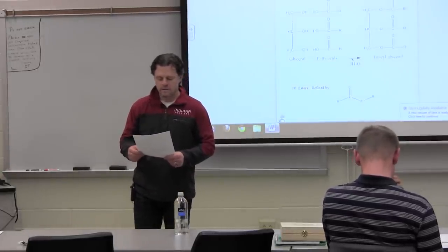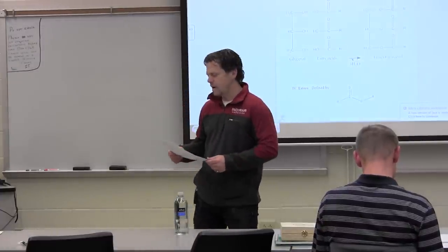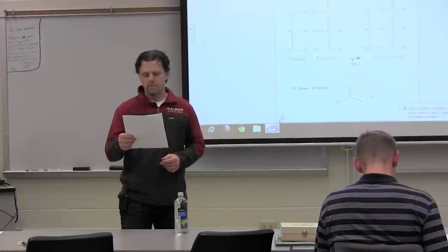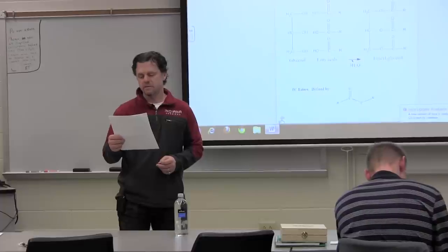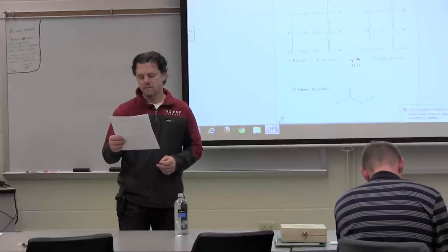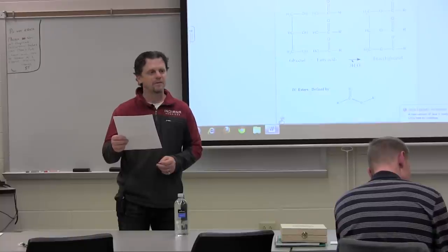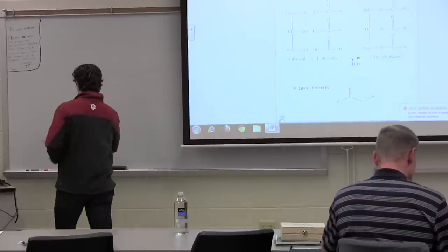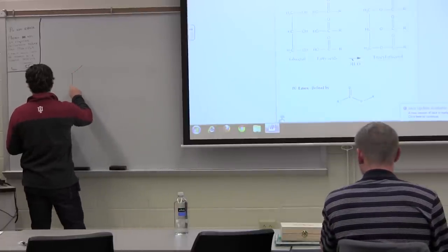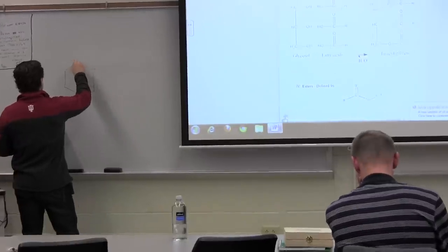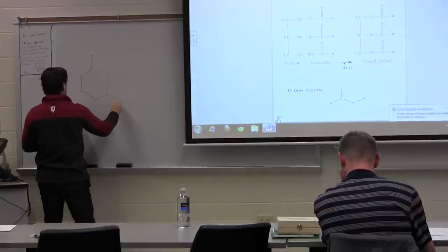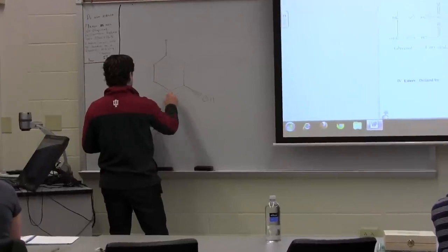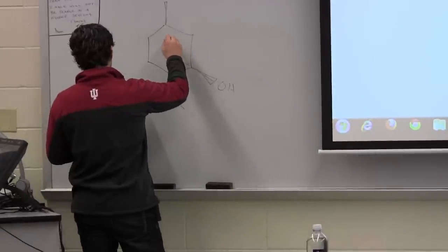The next one is menthol, and its chemical formula is C10H20O. Molecular weight is 156. The class of the molecule is a monoterpenol. And the chiral atoms, there are three of them. So there's one there, one there, and one there.